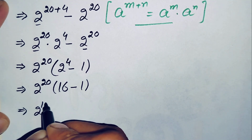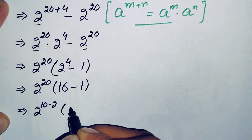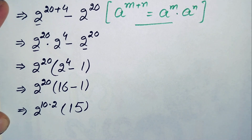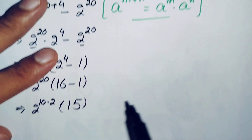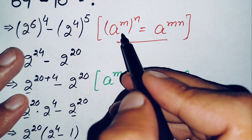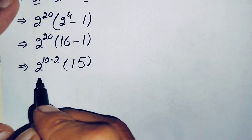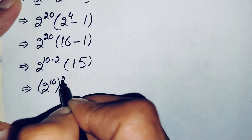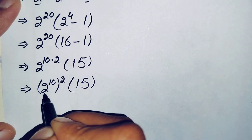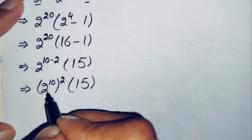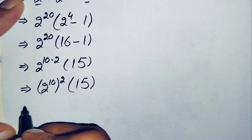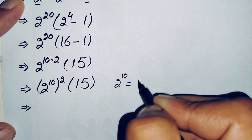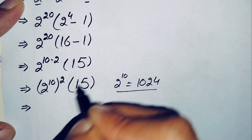16 minus 1 gives 15, so we have 2 raised to power 20 times 15. We can write 2 raised to power 20 as 2 raised to power 10 times 2. Using the exponential property again, this becomes 2 raised to power 10, all raised to power 2, times 15. Now 2 raised to power 10 is the well-known value 1024, so we replace it: this becomes 1024 whole squared times 15.